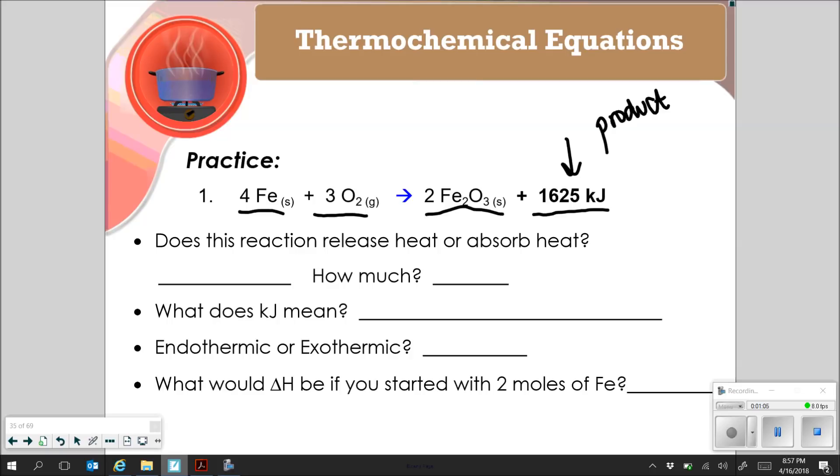Another thing to note is that this amount of energy, the 1625, is directly dependent on the number of moles in your chemical equation. So for 4 moles of iron, you get 1625. 3 moles of O2, 1625. Does this reaction release or absorb heat? Because the 1625 is a product, it is going to release heat. How much? 1625 kilojoules. The kJ means kilojoules. It is a measurement of heat.